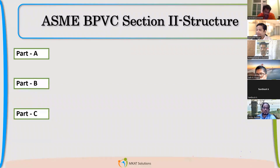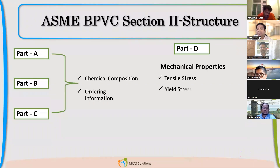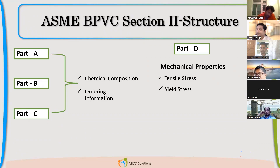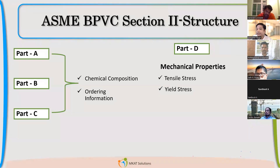Parts A, B, and C are actually specifications where you will find chemical compositions, ordering information, procurement details — such as what should be assigned as ordering information, whether heat treatment is required or not. All those things are covered in A, B, and C, related to different materials.